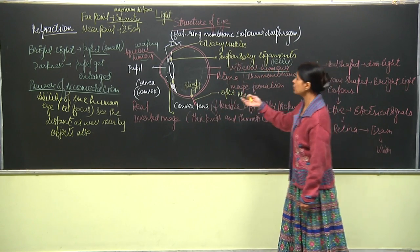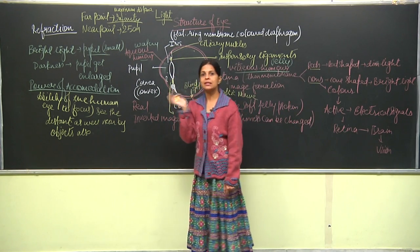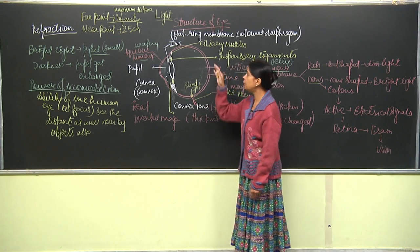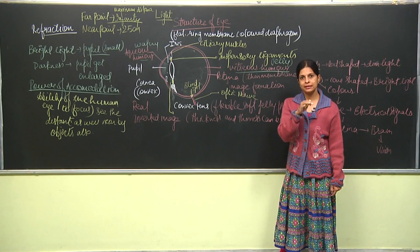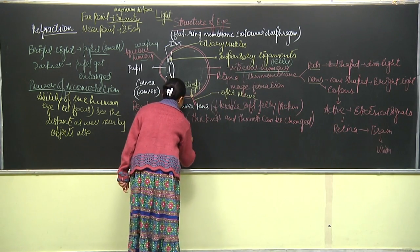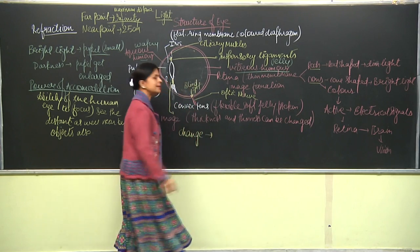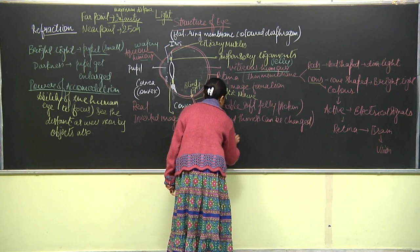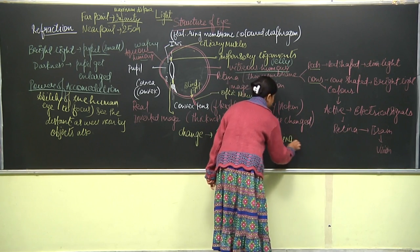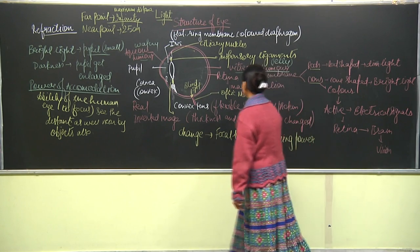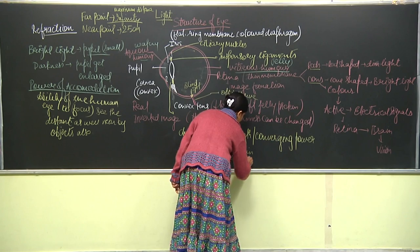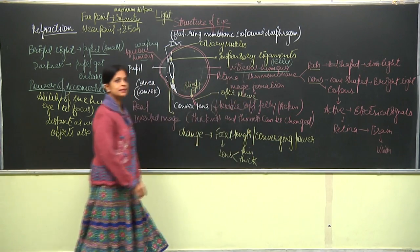The lens changes shape — its converging power changes, or we can say the focal length changes. Due to the change in focal length, distant objects can be seen and nearby objects can also be seen. The lens becomes thin or thick, allowing us to see both distant and nearby objects.